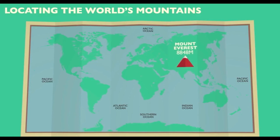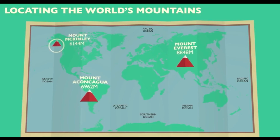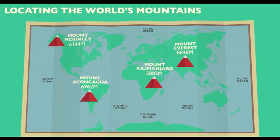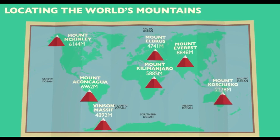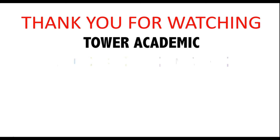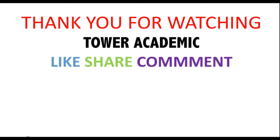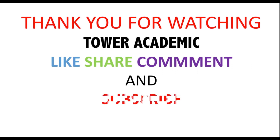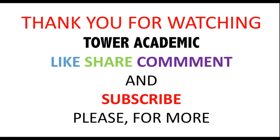Let's look at the top seven highest mountains in the world. Number one is Mount Everest, then Mount Aconcagua, Mount McKinley in North America, Mount Kilimanjaro in East Africa, Vinson Massif, Mount Elbrus, and Mount Puncak Jaya in Oceania. Thank you for watching Tower Academic — like, share, comment, and subscribe for more. See you next time.